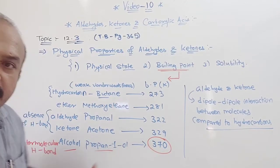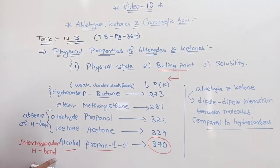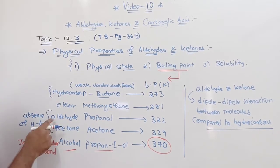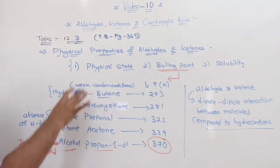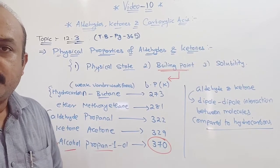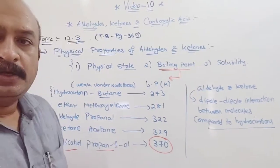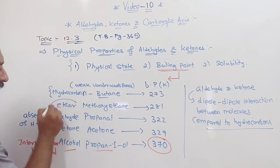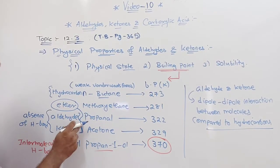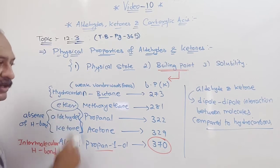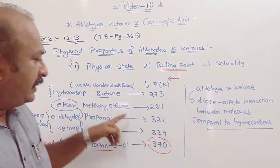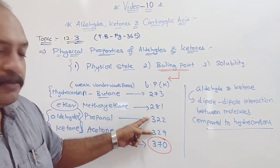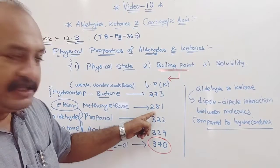Alcohol has intermolecular hydrogen bonding, while there is an absence of hydrogen bonding in aldehyde and ketone compared to alcohol. When we compare ether with aldehyde and ketone, ether has less dipole-dipole interaction compared to aldehyde and ketone. That is why aldehyde and ketone have higher boiling points compared to ether.